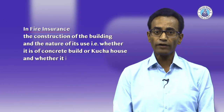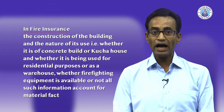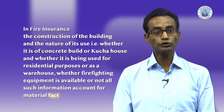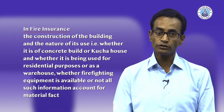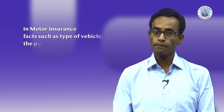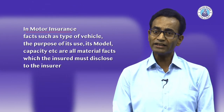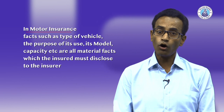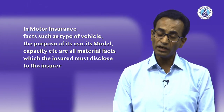Since it is a very important aspect that the scope of material fact changes depending upon the type of insurance product, I will further elaborate with the help of examples. In fire insurance, the construction of the building and the nature of its use — whether it is a concrete building or a kutcha house, whether it is being used for residential purpose or as a warehouse, whether firefighting equipment is available or not — all such information accounts for material fact. In motor vehicle insurance, facts such as type of vehicle, the purpose of its use, its model, capacity, etc. are all material facts which the insured must disclose to the insurer.